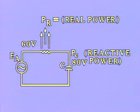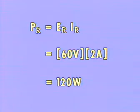The power dissipated as heat by the resistor, or real power, may be calculated as it was in a purely resistive series circuit. Simply multiply the voltage drop across the resistor by the value of the current flowing through it.